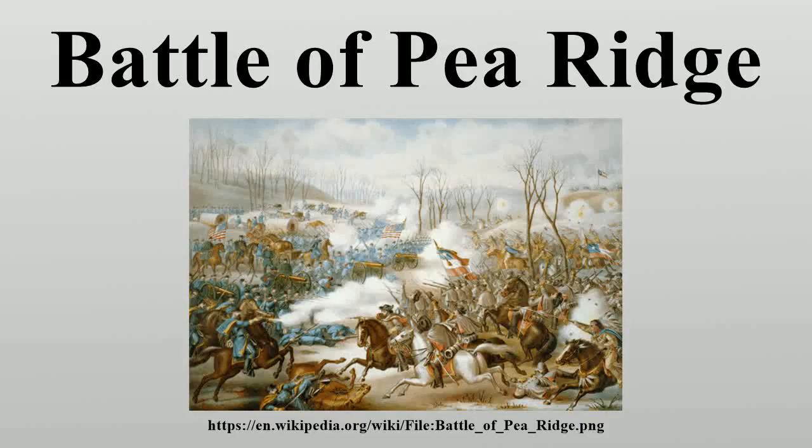The Battle of Pea Ridge was a land battle of the American Civil War. It was fought March 6–8, 1862, at Pea Ridge in northwest Arkansas, near Leetown.